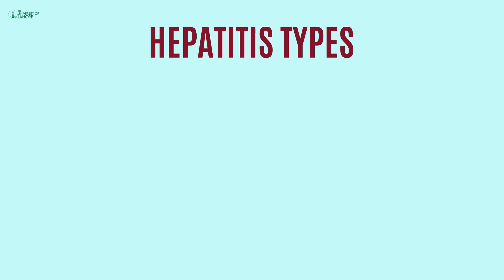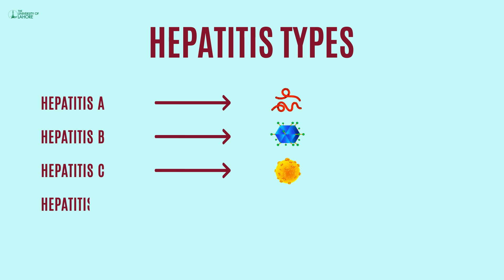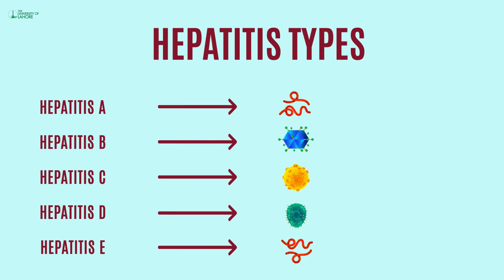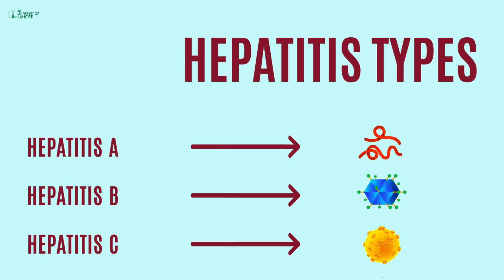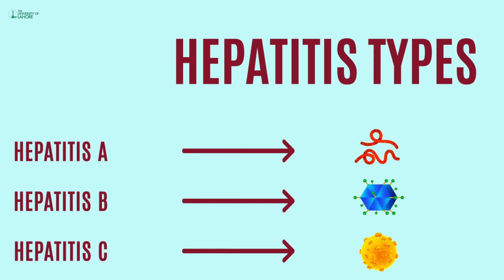Most hepatitis is caused by viruses and is classified as hepatitis A, B, C, D, and E. Hepatitis viruses A, B, and C are the most prevalent, and infection with any of these can be lethal.